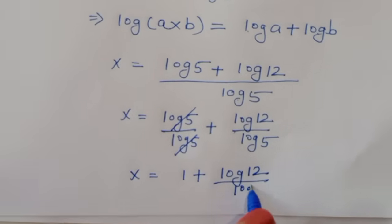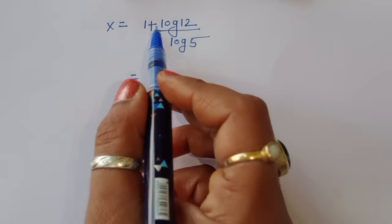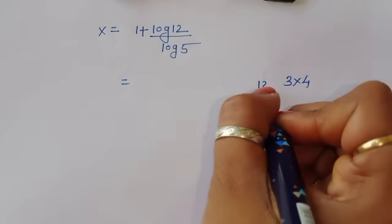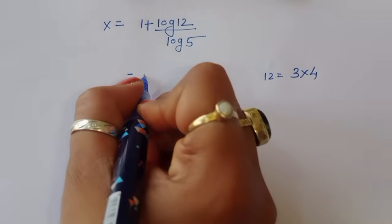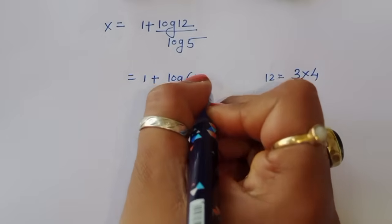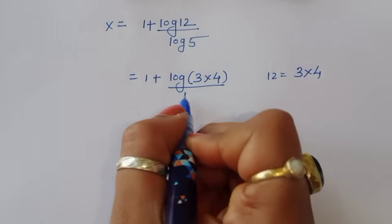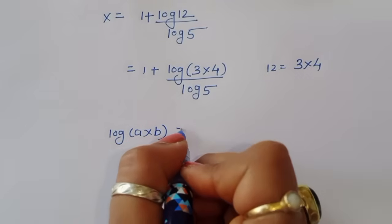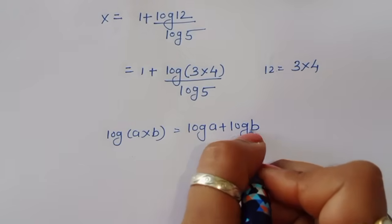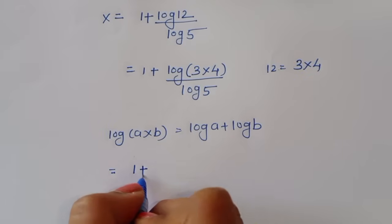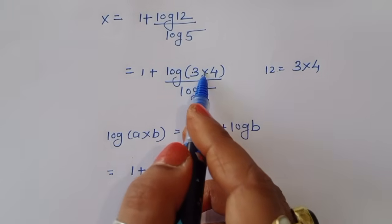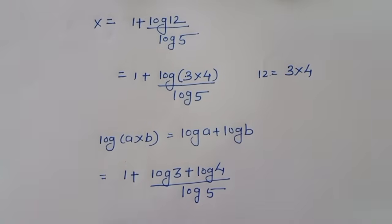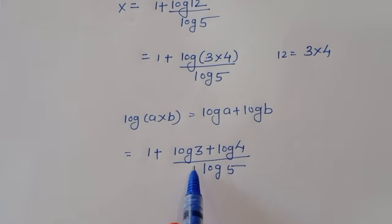Now for log of 12: a factor of 12 is 3 times 4, since 3 times 4 equals 12. So we write 1 plus log of 3 times 4 divided by log of 5. Again applying the formula log of a times b equals log of a plus log of b, we get 1 plus log of 3 plus log of 4, divided by log of 5.